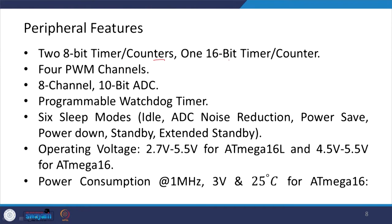The peripheral features include two 8-bit timer/counters, one 16-bit timer/counter, 4 PWM channels, 8-channel 10-bit analog-to-digital conversion, a programmable watchdog timer, and 6 sleep modes: idle, ADC noise reduction, power save, power down, standby, and extended standby. Operating voltage is 2.7V to 5.5V for ATMEGA16L and 4.5V to 5.5V for ATMEGA16, with power consumption measured at 1 MHz, 3V, and 25°C.